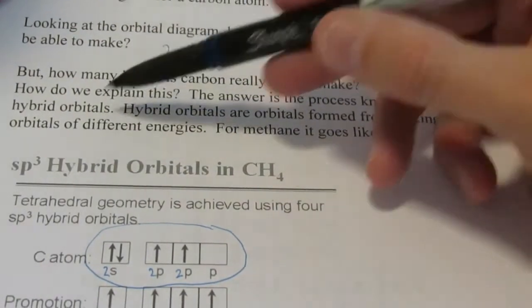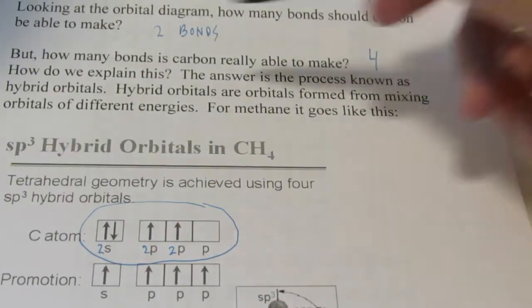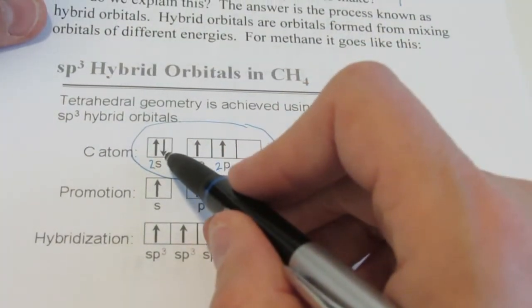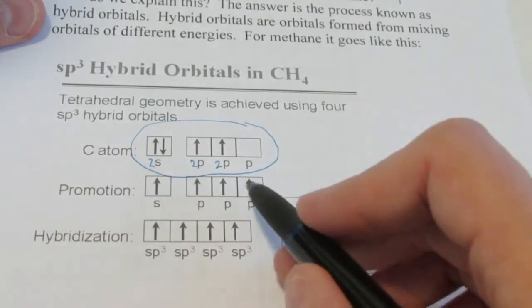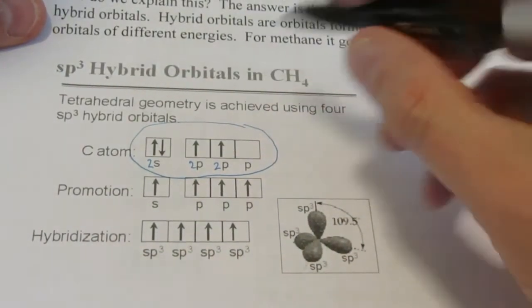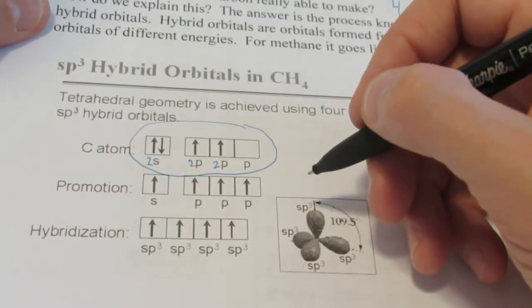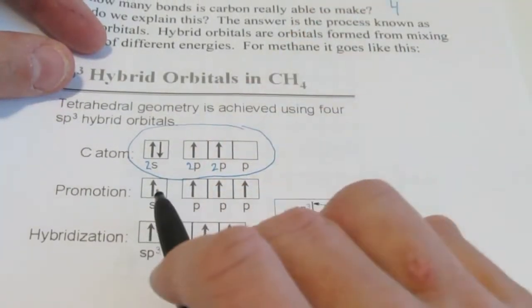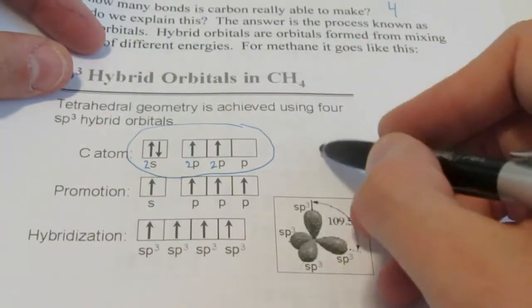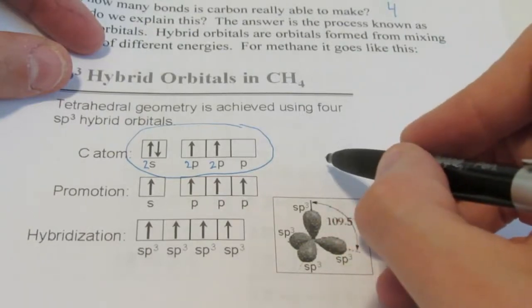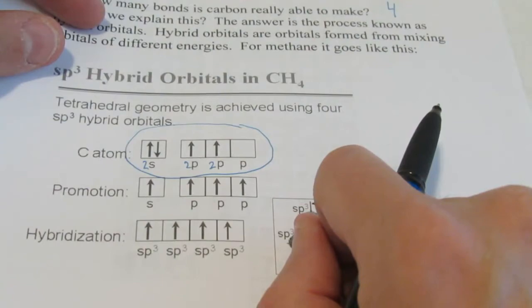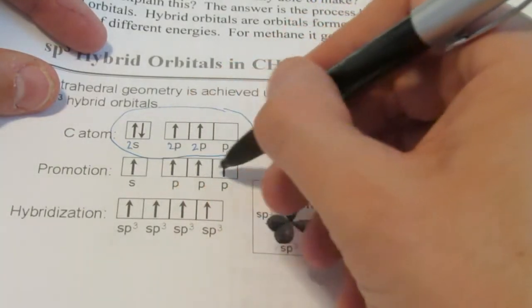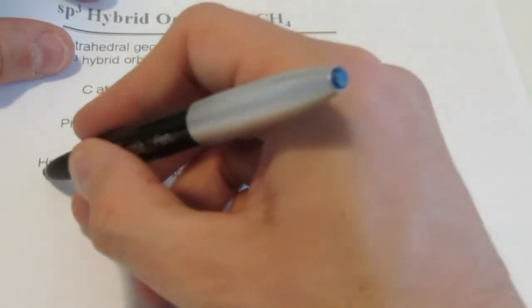Well the answer is the process known as hybrid orbitals. Hybrid orbitals are orbitals formed by mixing orbitals of different energies. For methane it goes like this. The first thing that happens is one of these 2s electrons is excited and taken up to the p sub-level. So now we have 1 in the s and 3 in the p. And you might think, well, we're done now. It can make 4 bonds. Yeah, but not in the configuration that we know exists in methane. We know in methane there's a bond angle of 109.5. In this situation we'd have an s orbital, which is a spherical orbital, and 3p orbitals, which are those figure 8 orbitals. And it would be very difficult to make 4 bonds with those orbitals like that, let alone have those bonds be at 109.5.